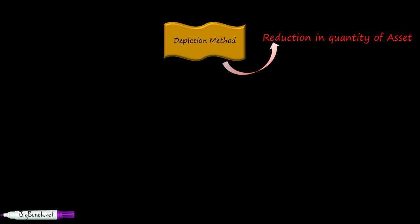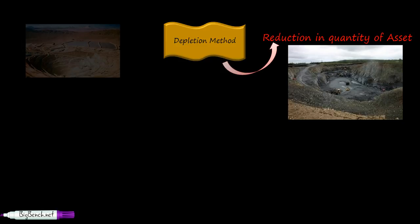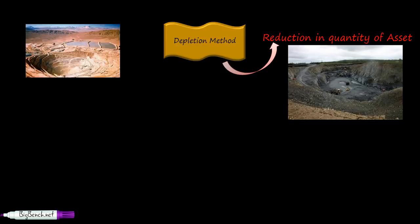Now the best example of depletion is a mine. Take a look at this coal mine. Typically, depletion method is used in special kind of assets like mines. These are called wasting assets. Also take a look at how a gold mine looks like. It's a very rare picture; we hardly get to see a gold mine.